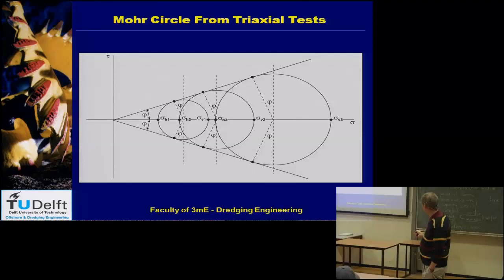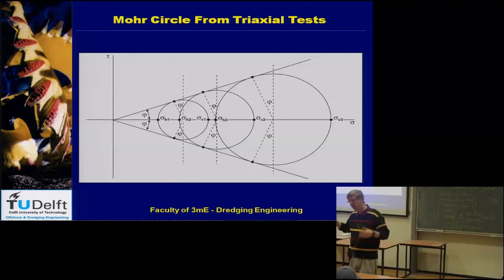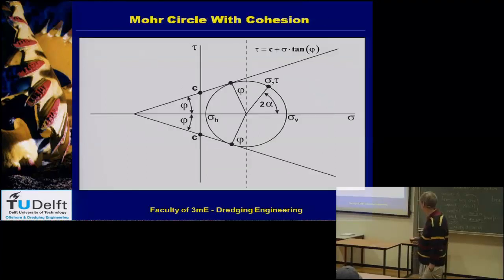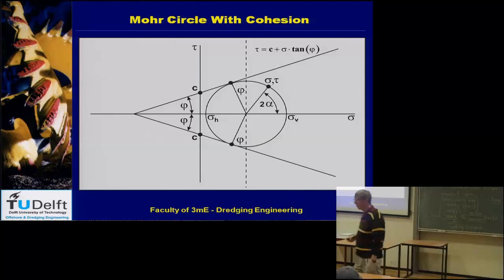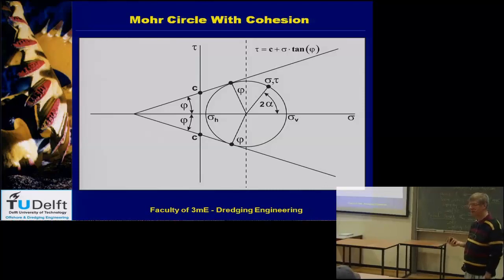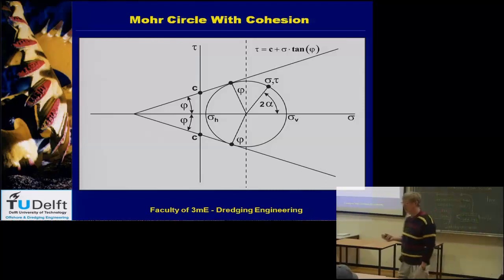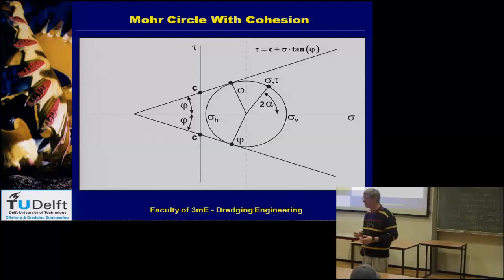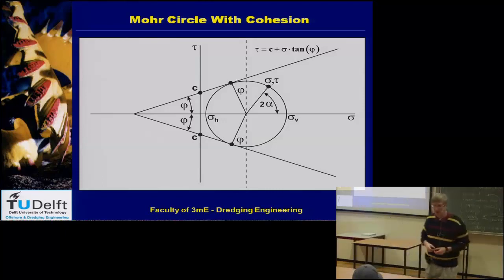To determine soil parameters, we take a number of samples and do tests at different confining pressures. Each test gives a Mohr circle, and we draw the best-fit tangent line through all circles to get an average angle of internal friction. In this picture, the circles are at sigma_V1, V2, V3 — each increasing pressure shifts the circle to the right. You don't always have sand; you can also have clay or loam.